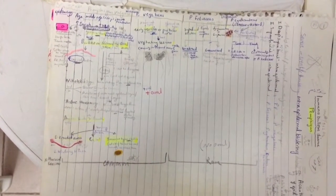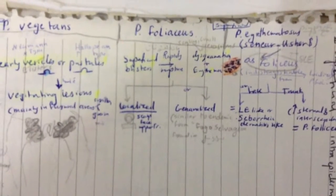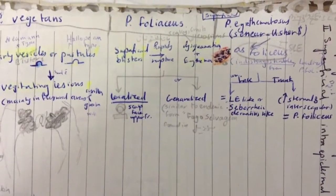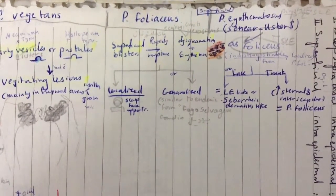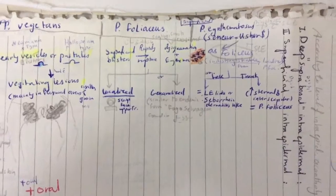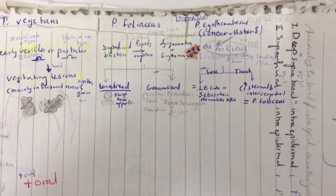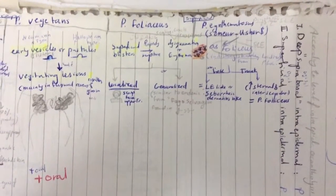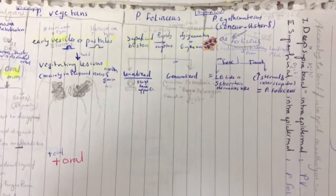Pemphigus foliaceous shows superficial blisters that rapidly rupture, leading to desquamation and erythema formation, with scaling, crusting, and erosions. It is usually localized to the scalp, face, and upper trunk, but sometimes generalized — as seen in Brazil. Pemphigus erythematosus (Senear-Usher syndrome) is clinically indistinguishable from the localized form of pemphigus foliaceous, occurring on the face as LE-like or seborrheic dermatitis-like lesions, and on the trunk with interscapular and sternal involvement. There is no oral affection.